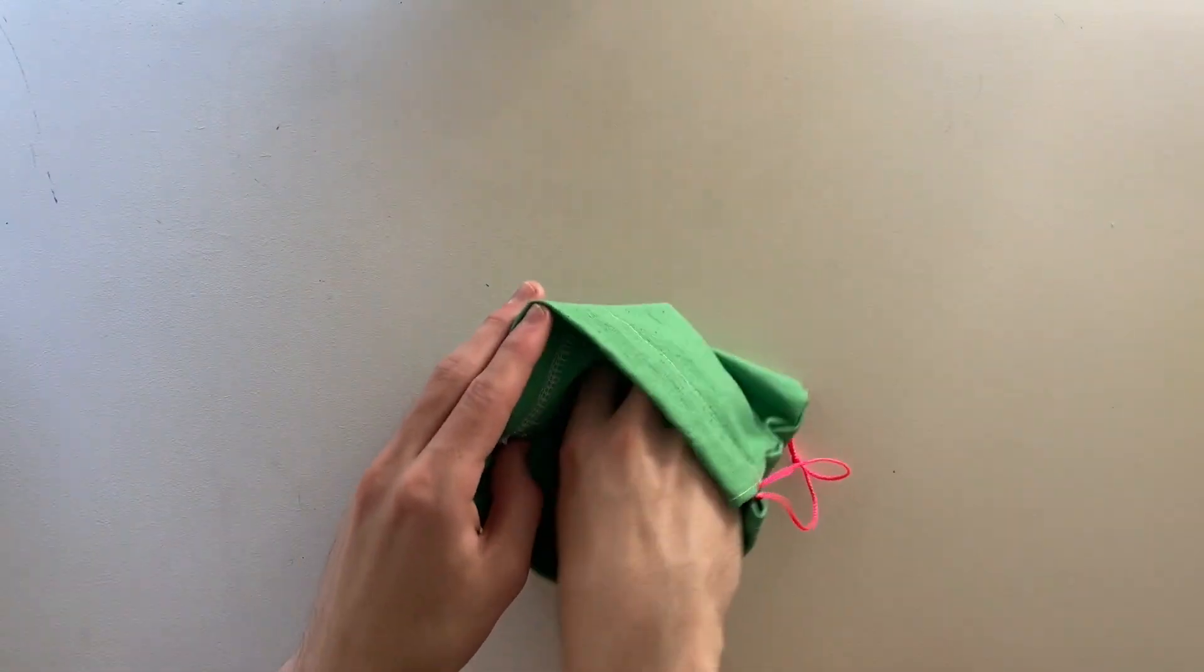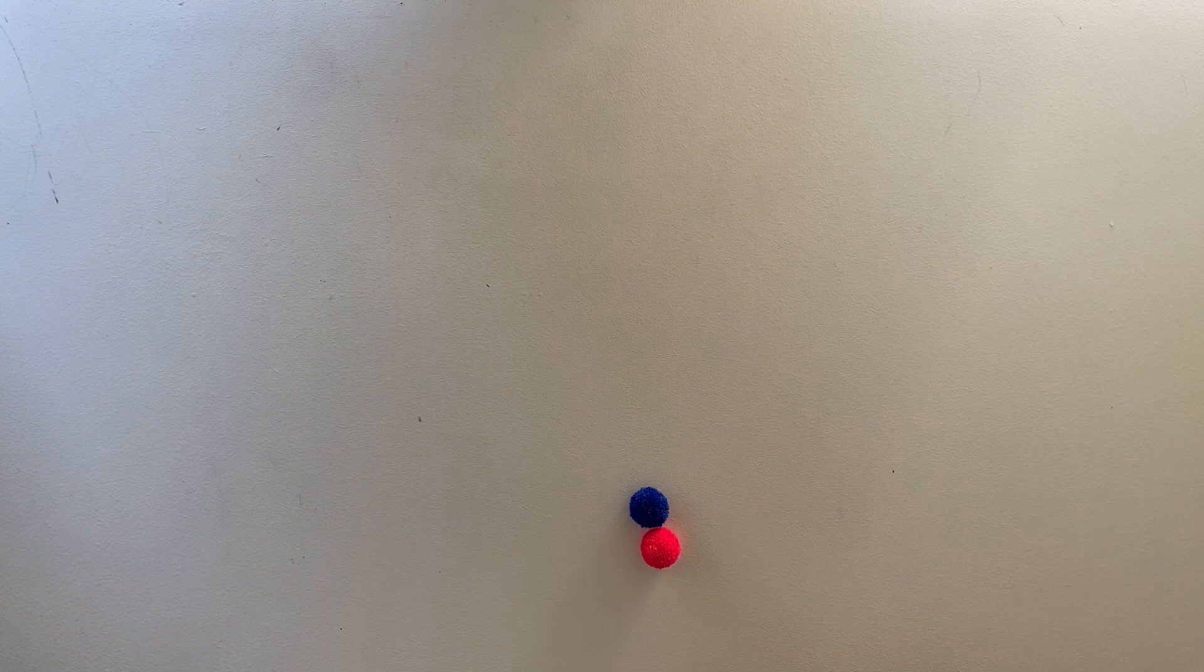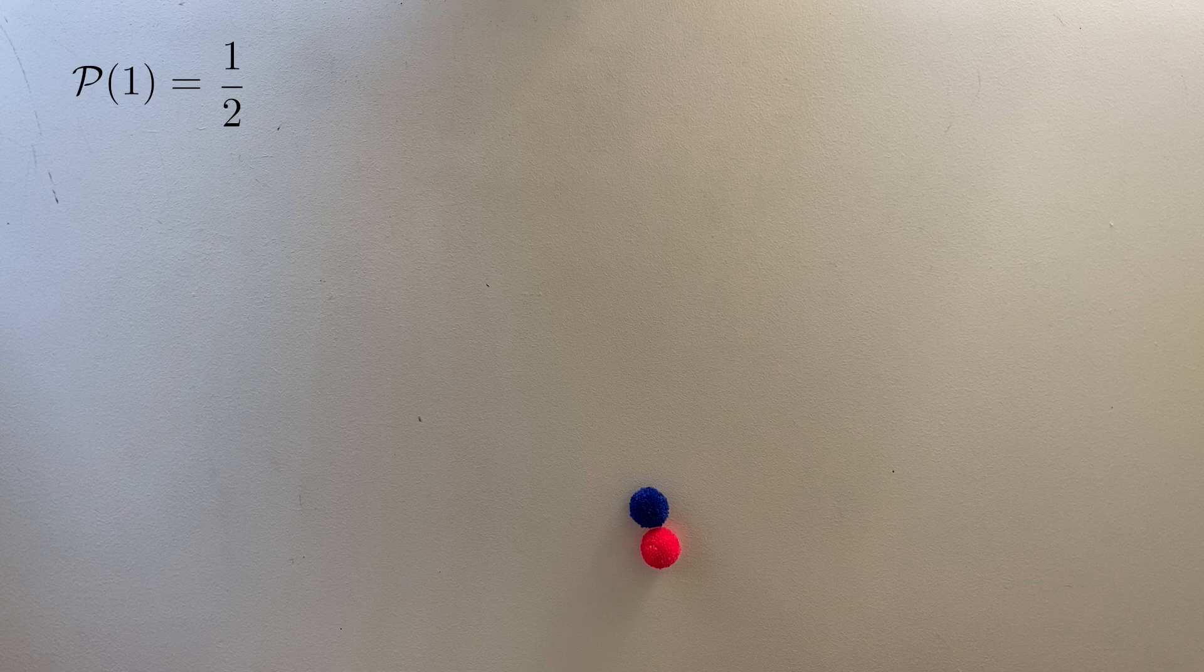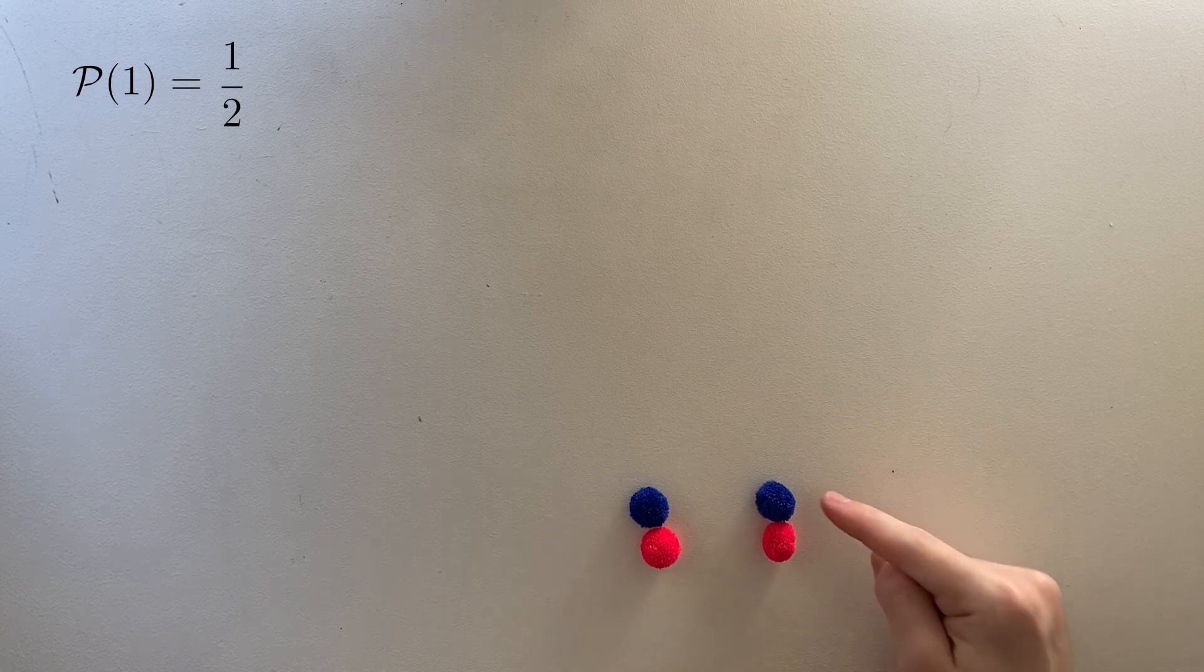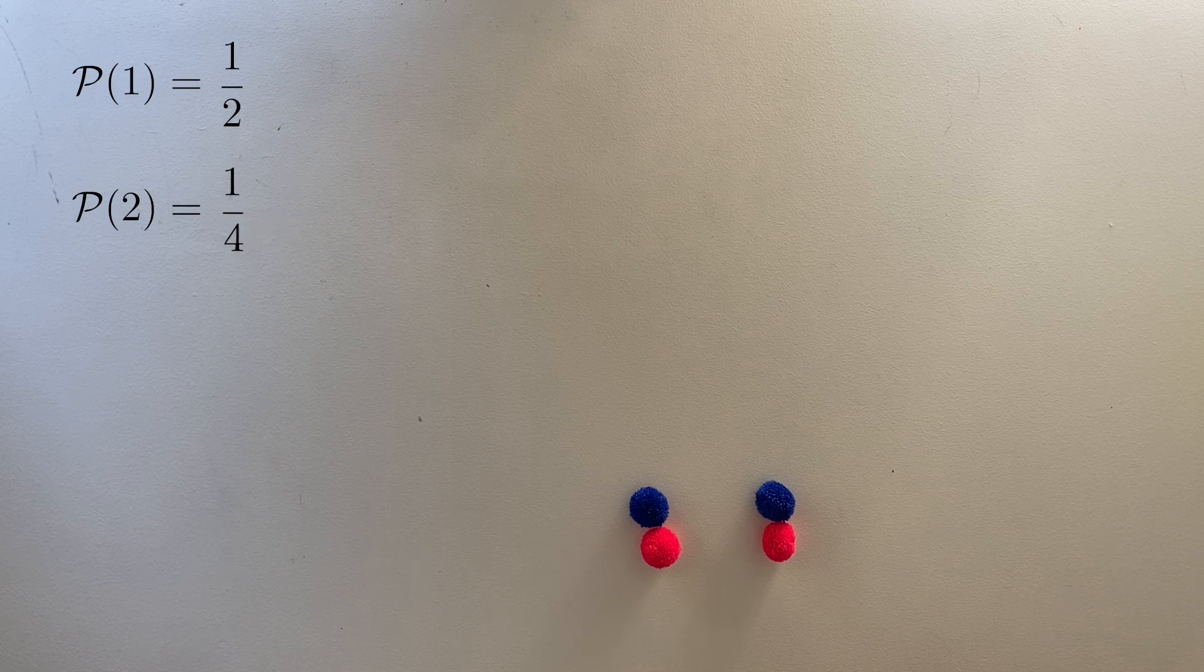So let's compute the expected value of our random game. If there's always just one red and one blue ball in the bag, how many draws does it take to get the blue ball? Well, we need to know the probability of each outcome. The probability of getting the blue ball on round one is one-half. In order to get the blue ball on round two, we need to get the red ball on round one and the blue ball on round two. So that's a half times a half, which is a quarter.